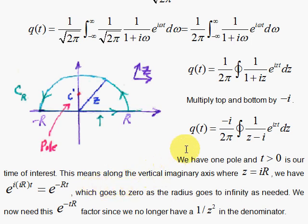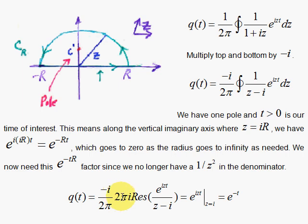We use the residue theorem to get the result, which is 2 pi i times the residue of the integrand. Notice that the factor out in front is here, minus i over 2 pi. And for the residue, for the single pole, you simply clear the denominator for that pole. There's only one there, so it's gone. And then you put in Z equal i for everything else. Notice all the cancellations here. It's amazing. 2 pi canceled, and then minus i times i is 1. Wow, all that went away. And then I just simply have e to the iZT evaluated at Z equals i, and that's i squared T. That's minus T. That's it. That's the Green's function. We did it.